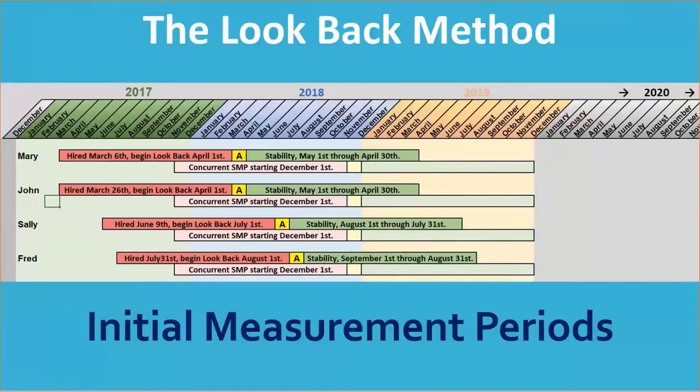Let's get into the possible sticking points as you're preparing to file for 2021. Identifying full-time employees: if you expect a new hire to average 30 hours a week or more, then you should offer them coverage within 90 days.